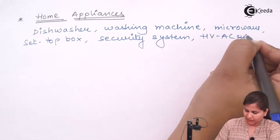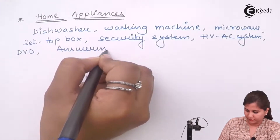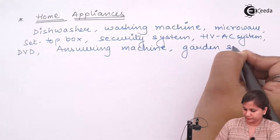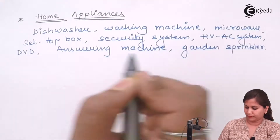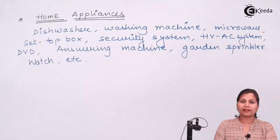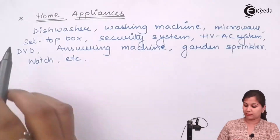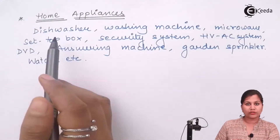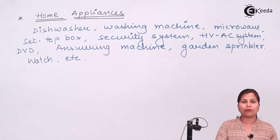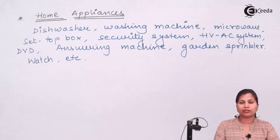In home appliances, examples of embedded systems include the HVAC system, DVD player, answering machine, garden sprinkler, and watch. All these home appliances are a type of embedded system. In the home, for the kitchen, for security, for entertainment like a set-top box and DVD, as well as the answering machine, garden sprinkler, and HVAC system — all are types of embedded systems. We can see various examples of embedded systems in our homes.